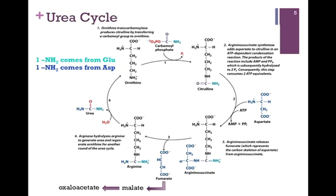It's not important that you remember every step. Remember this: the starting and ending molecule is ornithine. Our primary entry point is carbamoyl phosphate, and that amine group came from glutamate. Our second amine group came from aspartate. In the process, we not only formed urea but can also recycle a portion of the aspartate molecule in the form of fumarate back into the citric acid cycle.